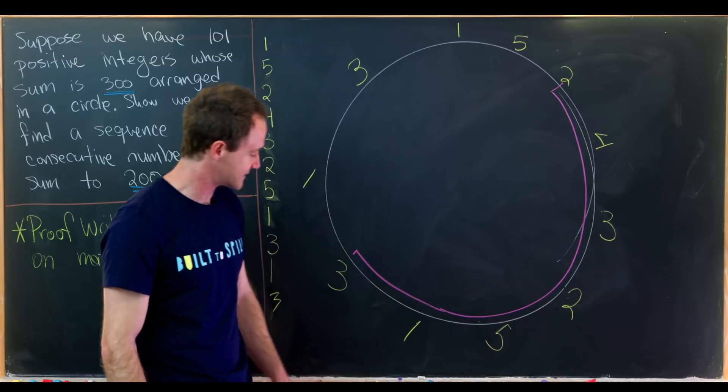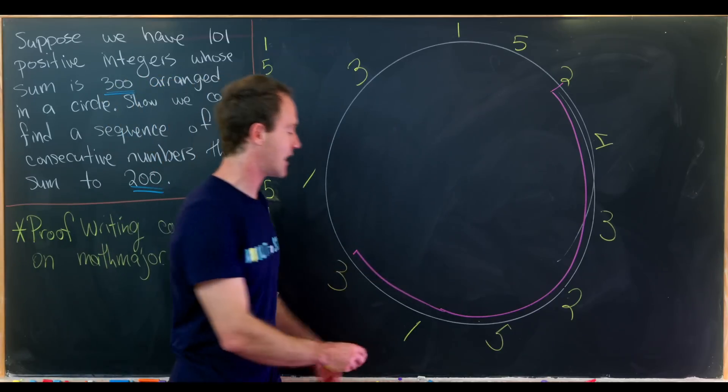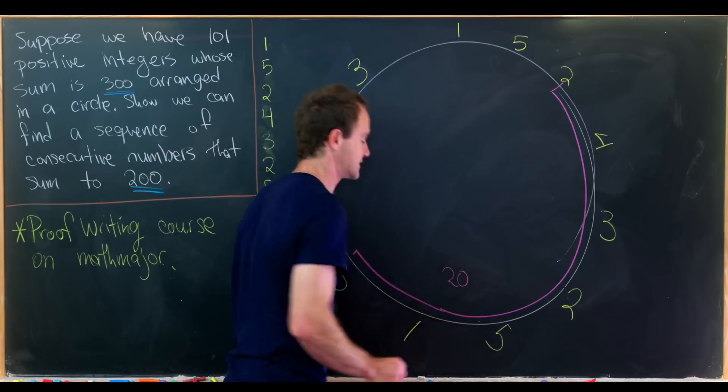11 plus 5 gives us 16. Here we have 17, 18, 19, 20. So we found an arc that sums to 20.